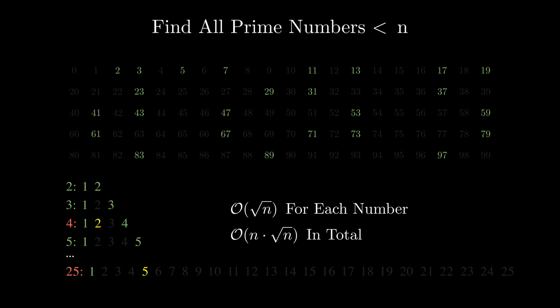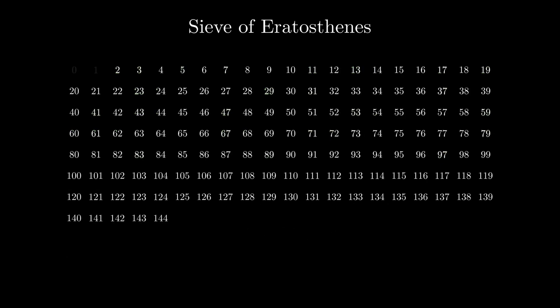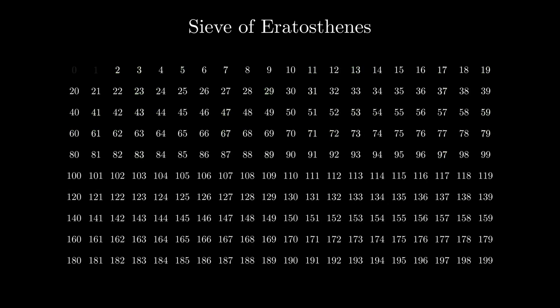There is a much better way of finding all the prime numbers smaller than n. We can change the approach from iterating over all possible divisors for each number to proactively removing all the numbers from the list that we know are not going to be prime.